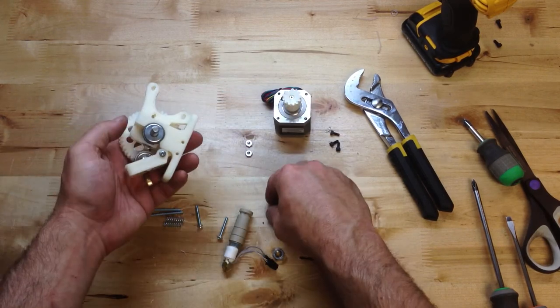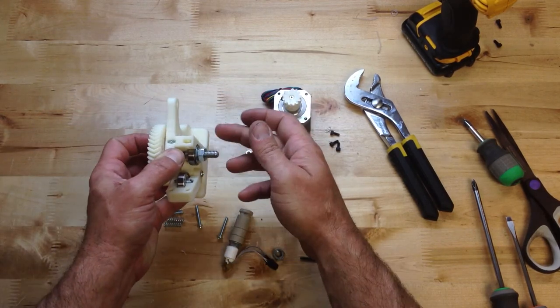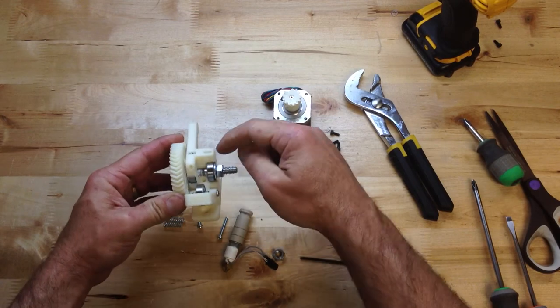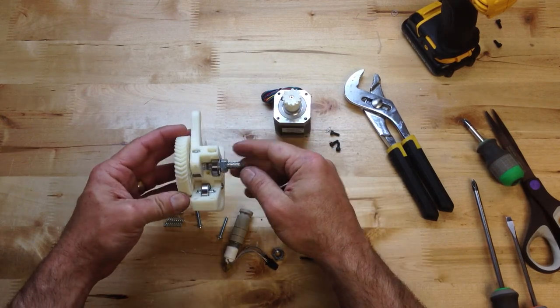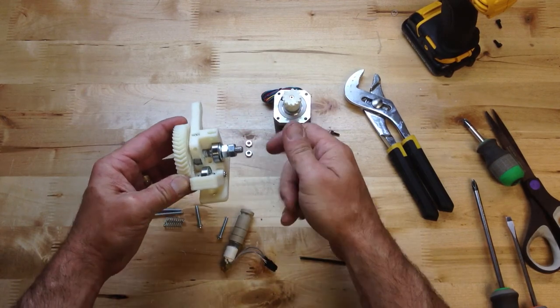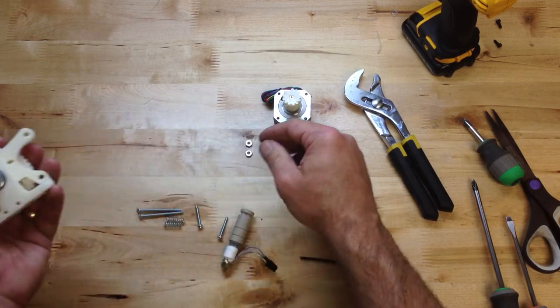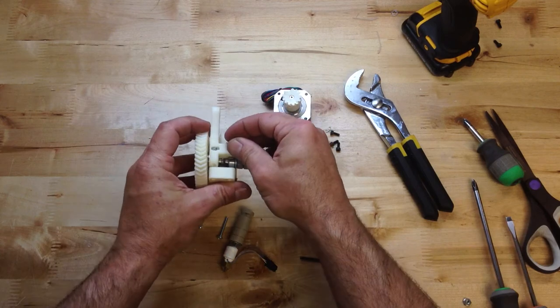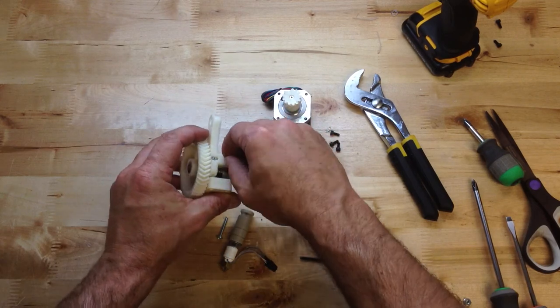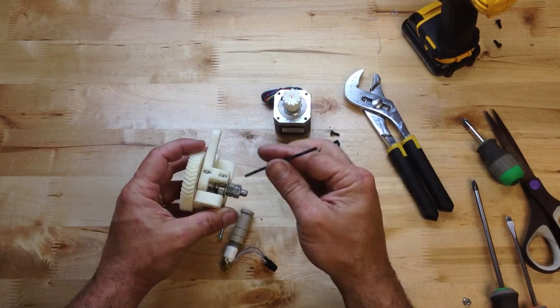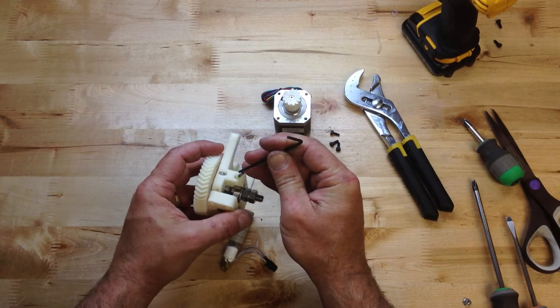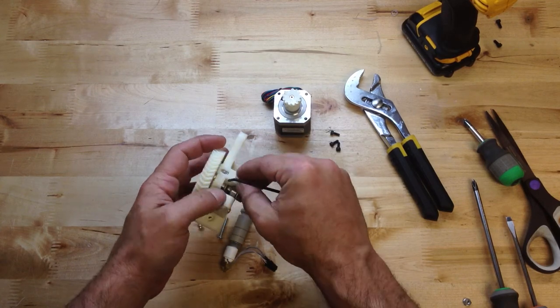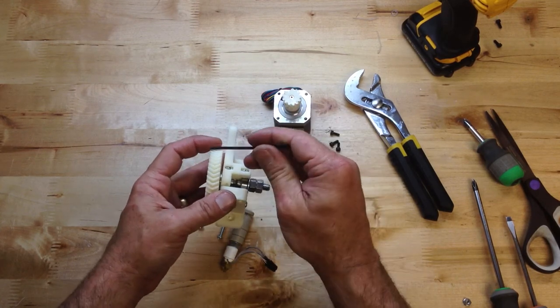You just need two washers, and you want that hob to be right above. Now these are the only two places that hex nuts have to go in. This has to be hex nuts, here and here.